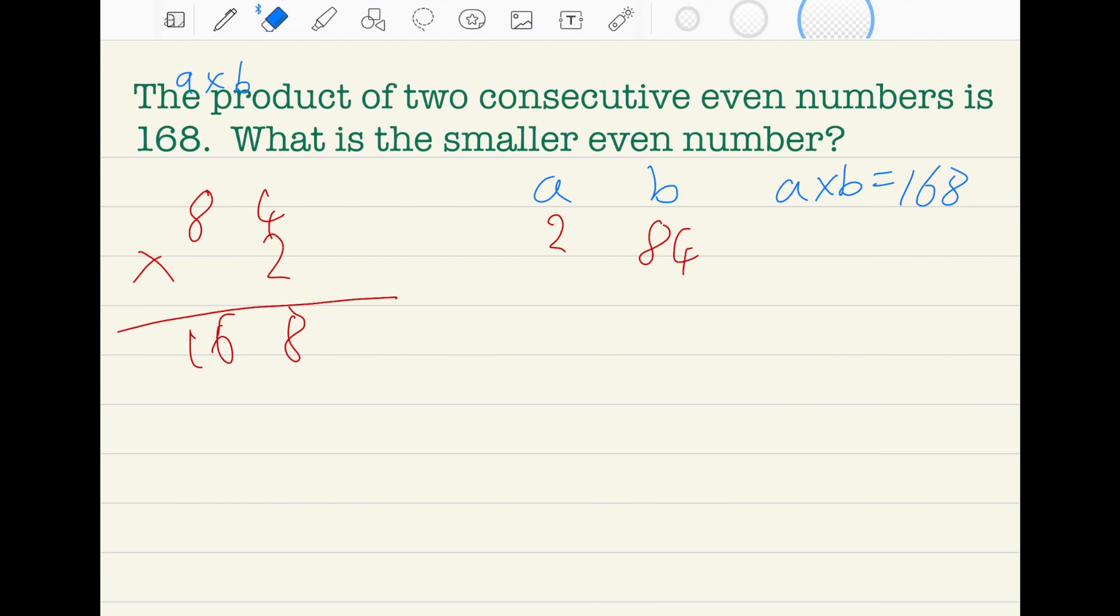This is not the answer of two consecutive numbers because the other consecutive number should be 4, but 4 is not there. Only 4 is in the ones place in 84, but 84 is not after 2. It's not after 2. So it is not this one.